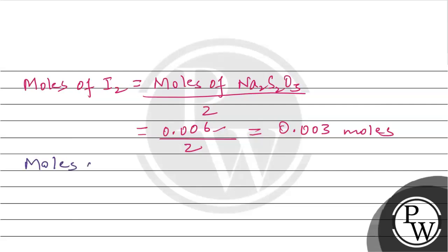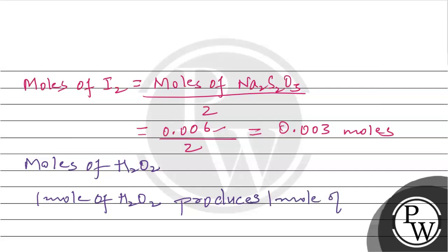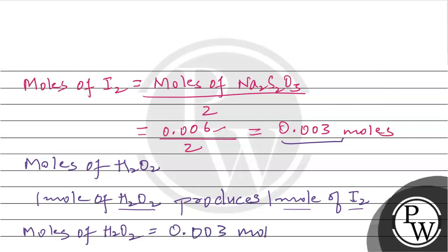Now we will find the moles of hydrogen peroxide. From the first reaction, 1 mole of hydrogen peroxide produces 1 mole of iodine. So moles of hydrogen peroxide equal moles of iodine, which is 0.003 moles.